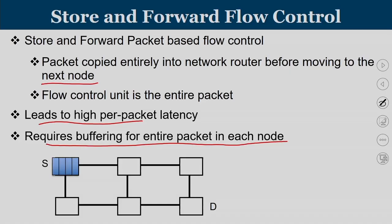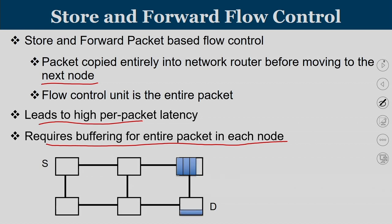In store-and-forward, the first flit comes, then the second, third, and final flit. Once the entire packet has reached the next router, it advances to the next one. Advancing from one router to another happens fully in terms of packets — all the flits get copied and only then does it move to the next destination. You require total buffering inside each router. Can we do better? That is the design issue.